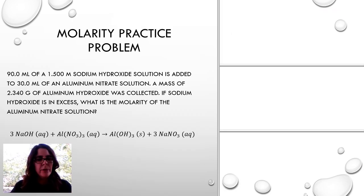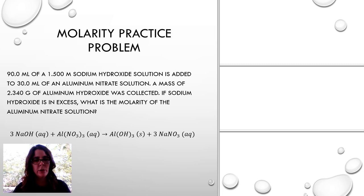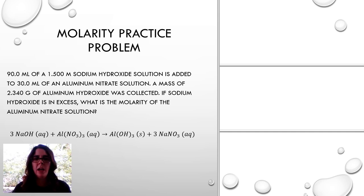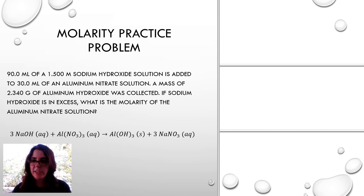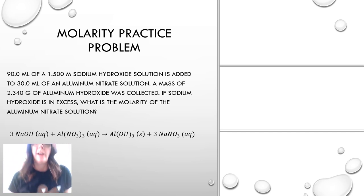Let's run through a quick practice problem similar to today's experiment, but using aluminum instead of calcium. We have a known sodium hydroxide solution, and we're using 90 milliliters of a 1.5 molar solution. To it, we're adding 30 milliliters of an unknown aluminum nitrate solution. We form a precipitate of aluminum hydroxide and collect 2.340 grams. What is the molarity of the unknown aluminum nitrate?